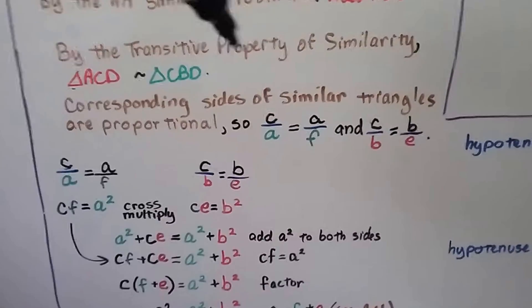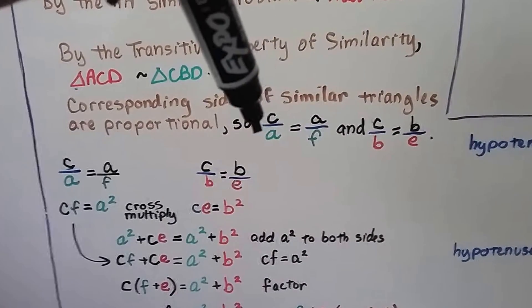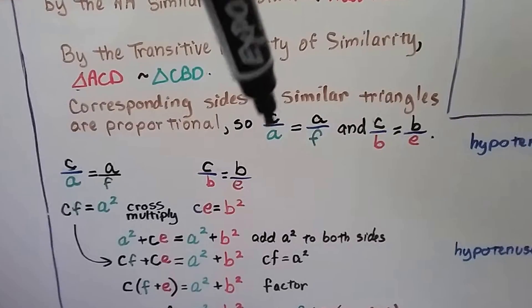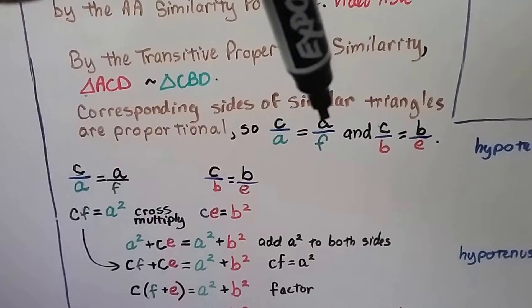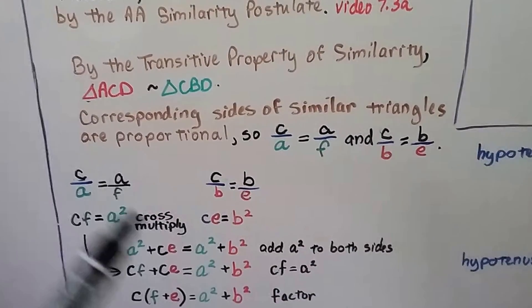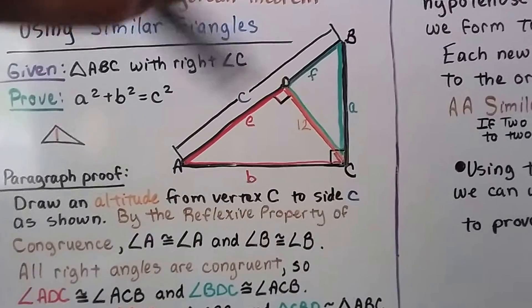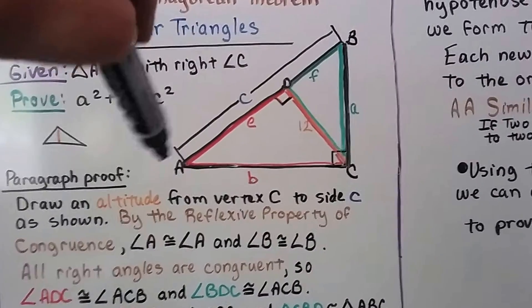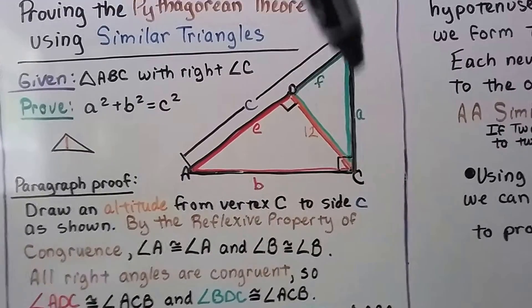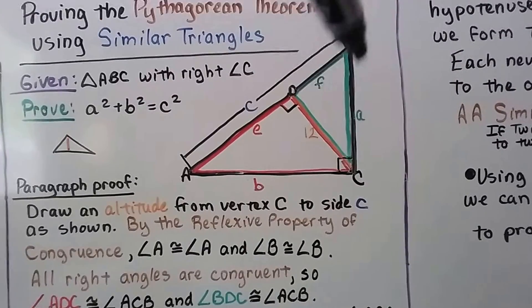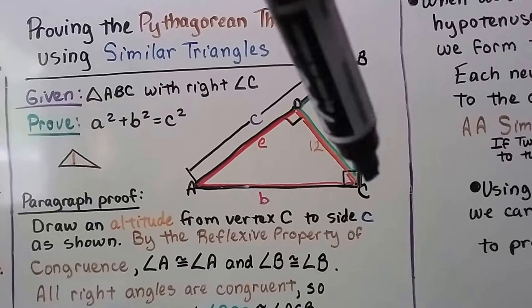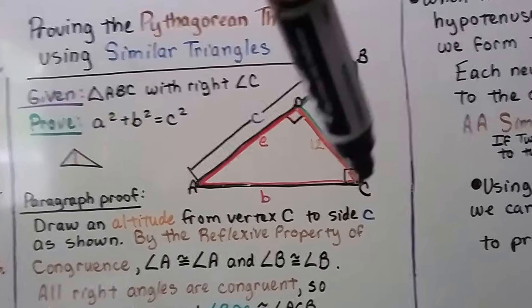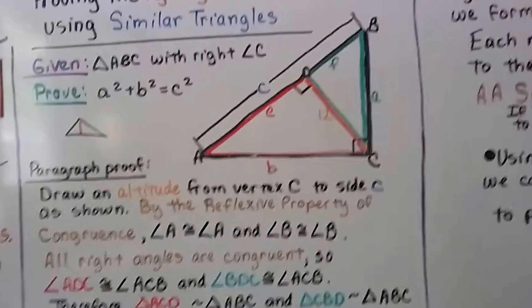So, the hypotenuse C for the big black one over the hypotenuse for the green one is equal to the leg of the big black one over the leg of the green one. So we've got this hypotenuse for the big black one over this hypotenuse of the green one. Then we've got the black leg of the black triangle over the green leg of the green triangle.